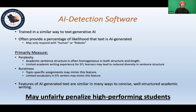AI detection software is trained in a very similar way to text-generative AI — it is trained on a very large dataset of whatever is available online, both human-generated and AI-generated. Usually, this software responds with a percentage of how likely it believes the text is AI-generated, and often highlights text that shows perplexity and burstiness similar to what would be expected from AI-generated output. However, some only respond with outcomes such as 'human,' 'robotic,' or 'very robotic' and do not highlight the text.